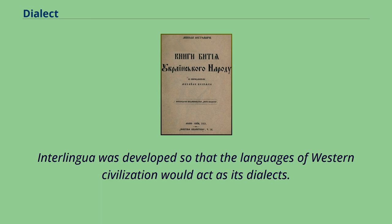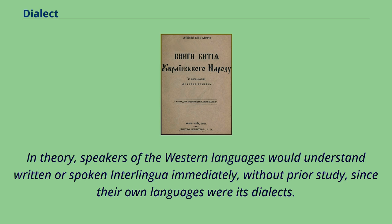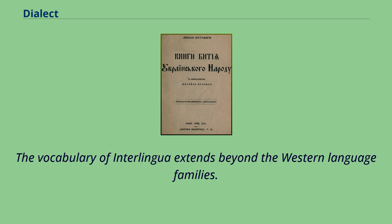Interlingua was developed so that the languages of Western civilization would act as its dialects. Drawing from such concepts as the International Scientific Vocabulary and Standard Average European, researchers at the International Auxiliary Language Association extracted words and affixes to be part of Interlingua's vocabulary. In theory, speakers of Western languages would understand written or spoken Interlingua immediately without prior study, since their own languages were its dialects. Interlingua could also be used to assist in the learning of other languages, and its vocabulary extends beyond the Western language families.